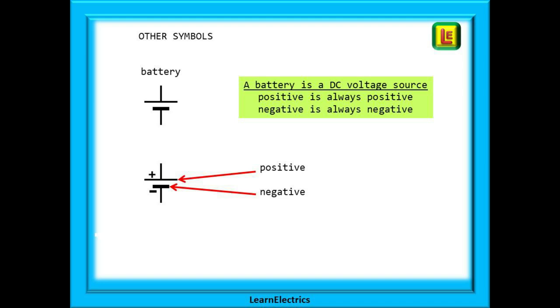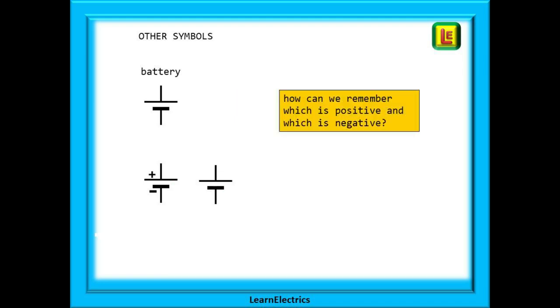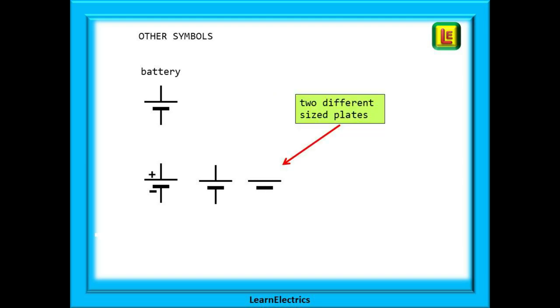In this video we will be looking at DC or direct current voltages. A battery is a DC voltage source. There is a positive terminal and a negative terminal. Think of your car battery. Positive is always positive and negative is always negative. How can we remember which terminal is which for a battery? Because knowing this will be important when looking at circuit diagrams. You must be able to identify positive and negative accurately every time. We have a long plate and a short plate, so which is which?